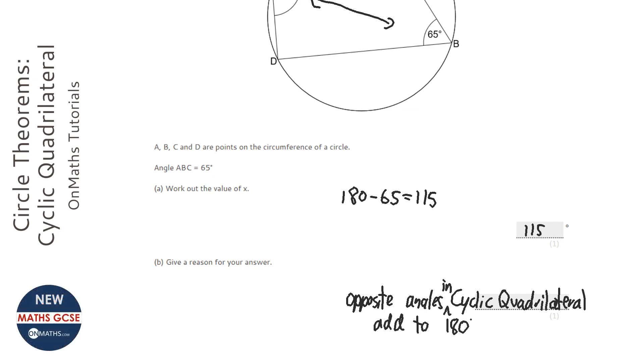In most exams they're just looking for cyclic quadrilateral as a reason. Normally you'd write it down in the first part of the question where it says work out what x is and give reasons for your answer, and you just put in brackets cyclic quadrilateral. But it's always best to write too much than too little.